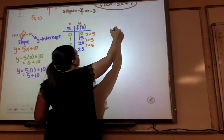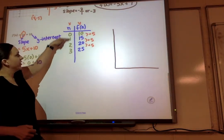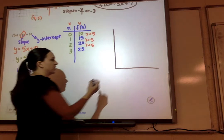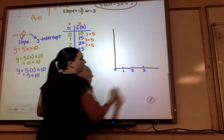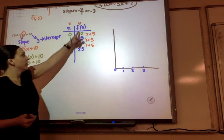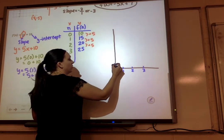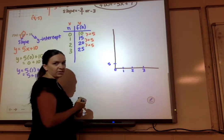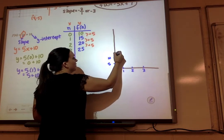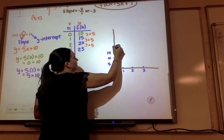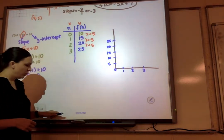We just need to graph it. Our x values or our n values go from 0 to 3, and our y values or f of n go up to 25. So I'm going to go by fives because I need to get my line all the way up to 25. Once you have your scale, plot your points.